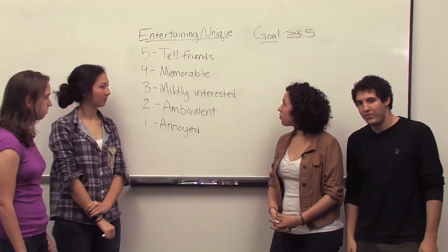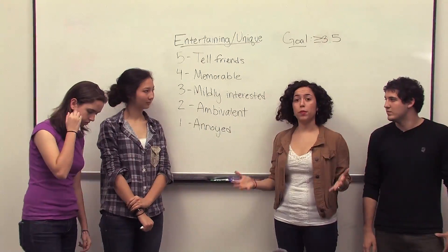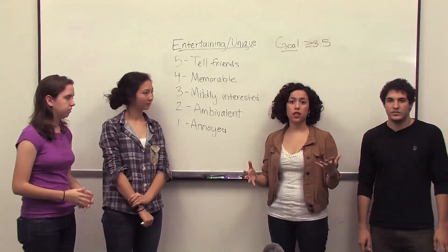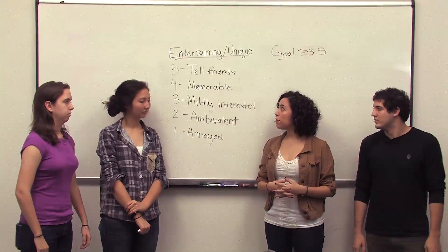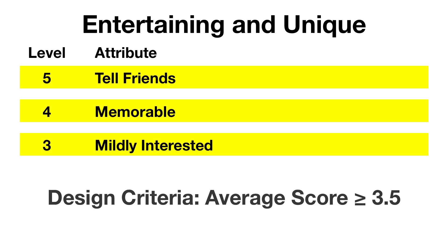We had one design criteria we could not measure using normal metrics — it was measured by the feeling or opinion of each individual person. To address that, we created a user-defined scale for 'entertaining and unique': 5 means the user was so excited they would tell their friends; 4 means the device was memorable; 3 means mildly interesting; 2 means ambivalent; and 1 means annoyed by the device. Our goal after surveying customers and taking the average is greater than or equal to 3.5 on our user-defined scale.